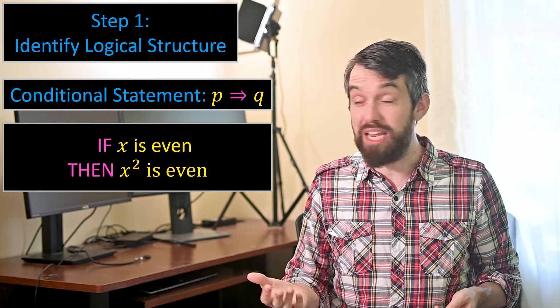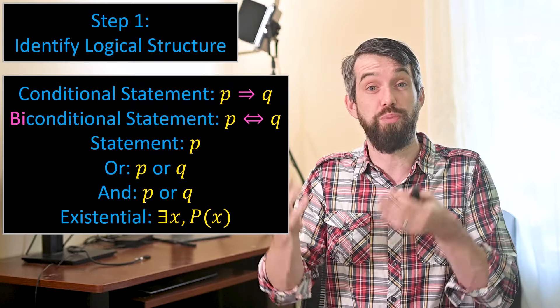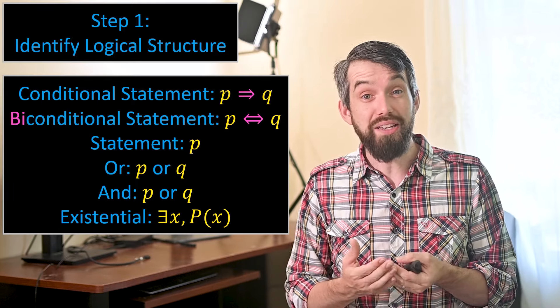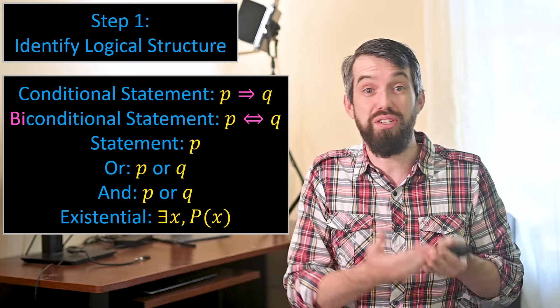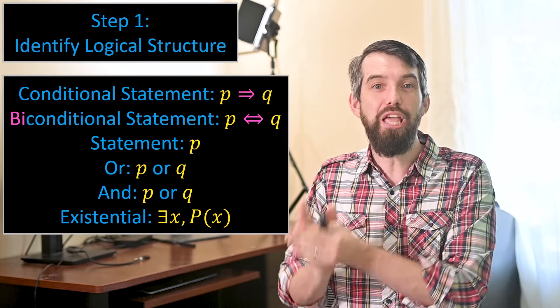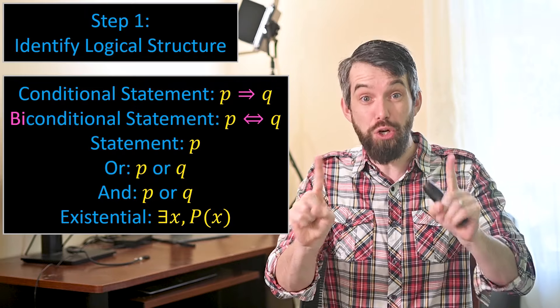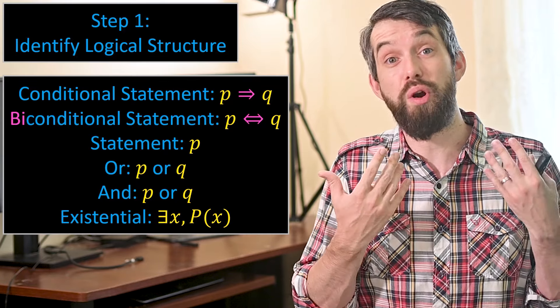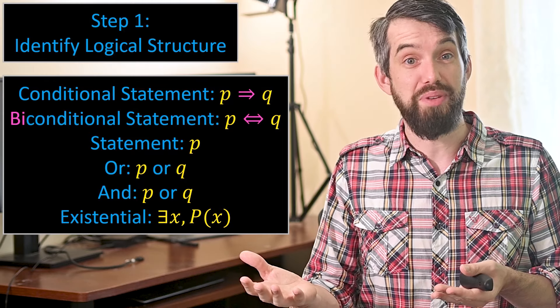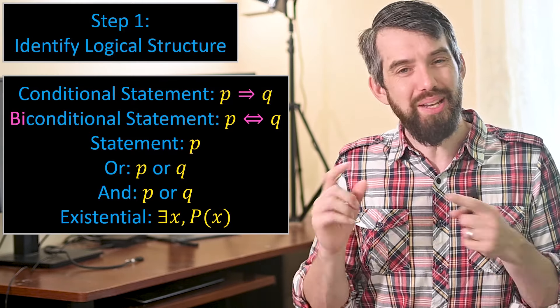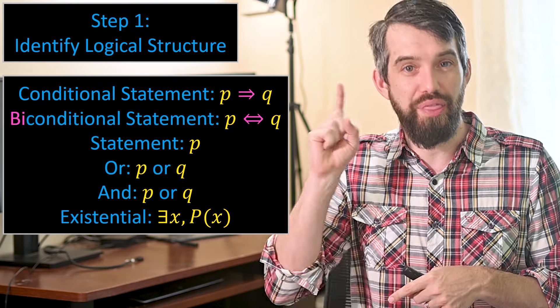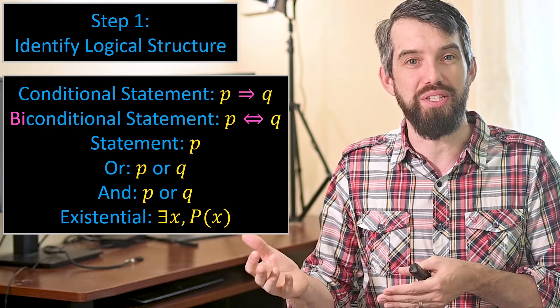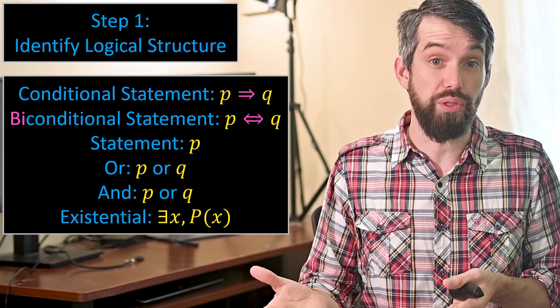Now, conditional statements are not the only type of statements. I can put up a list of different possible logical structures that your claim has. For example, it might be a biconditional. Biconditionals are interesting because they're kind of like two different conditions at the same time: if P, then Q, and if Q, then P. If it's a biconditional, you have really two proofs that you have to do, showing one direction and the other. Sometimes it's not structured as a conditional, like the claim there are infinitely many prime numbers. Sometimes you have P and Q, or P or Q. Sometimes you're trying to show that there exists, this is what the backwards E means, some value that obeys some properties. An example might be like there exists an oldest human on planet Earth.